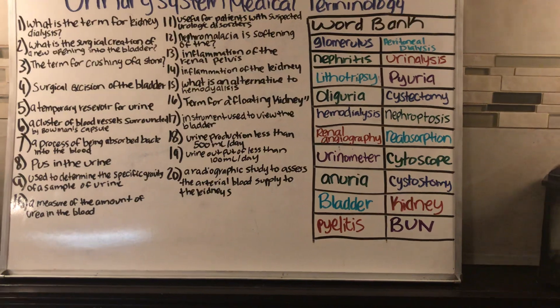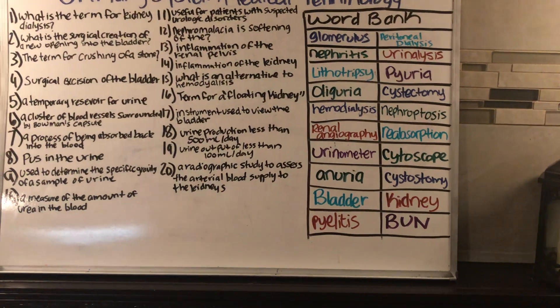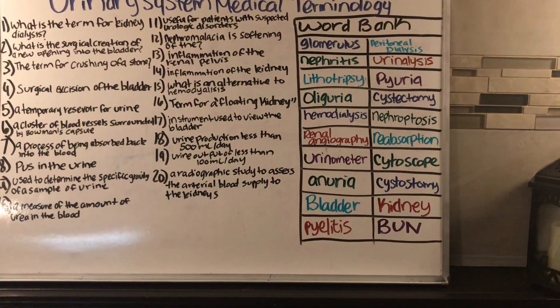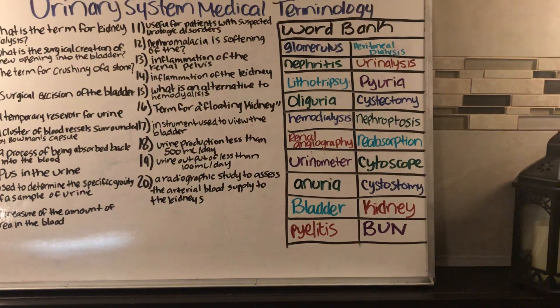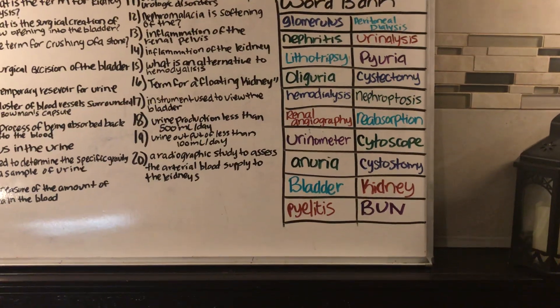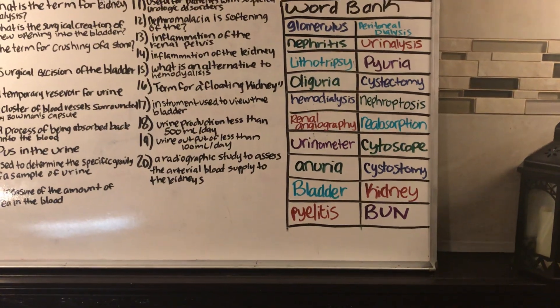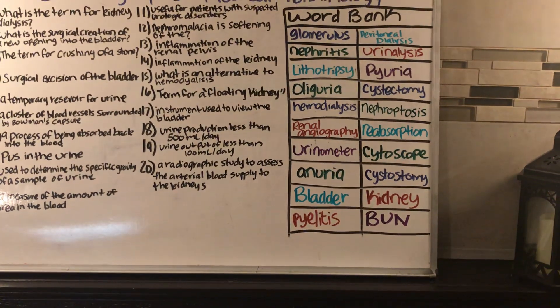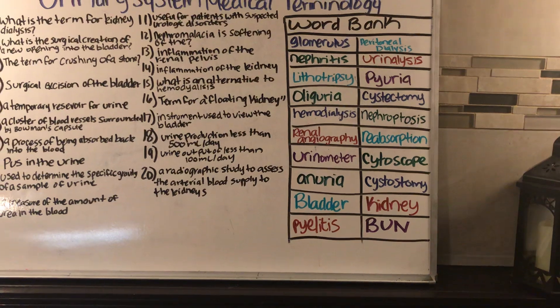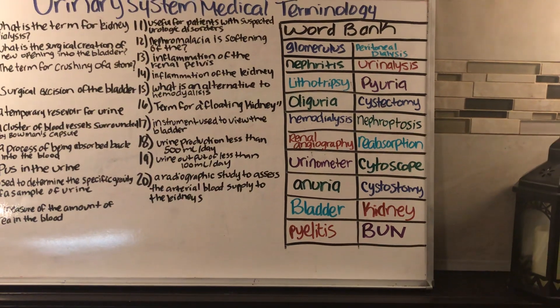Number nine: what is used to determine the specific gravity of a sample of urine? Urinometer.